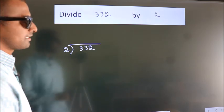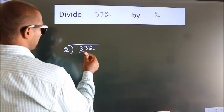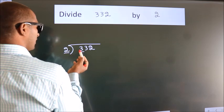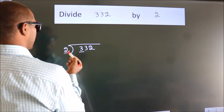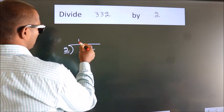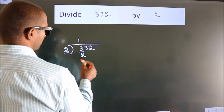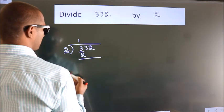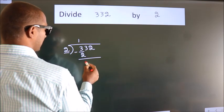Next. Here we have 3, here 2. A number close to 3 in the 2 table is 2, 1 times 2. Now we should subtract. We get 1.